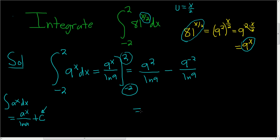9 squared is 81, so we get 81 over the natural log of 9 minus, and we can write this as 1 over 81 over the natural log of 9. How do I do that? 9 to the negative 2 is 1 over 9 squared, which is 1 over 81.